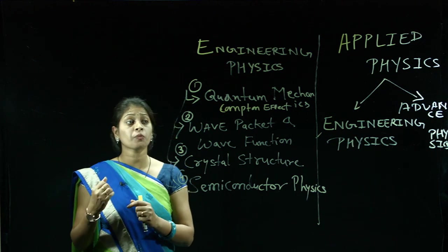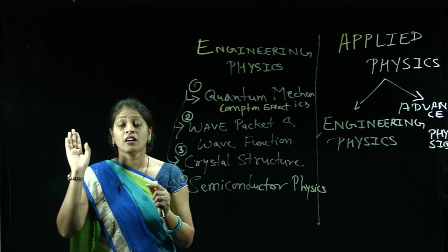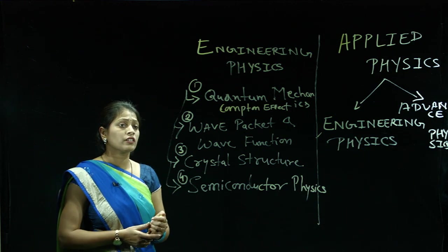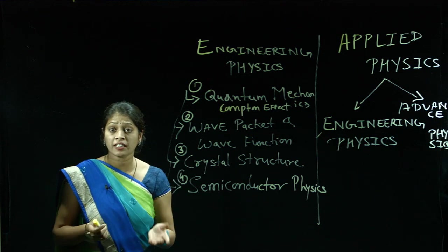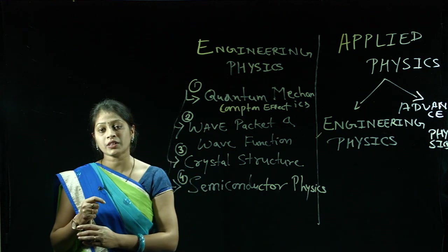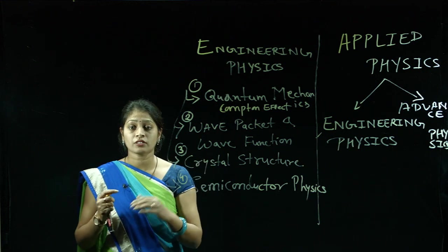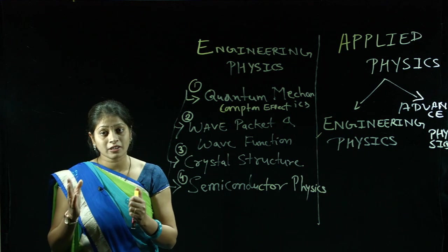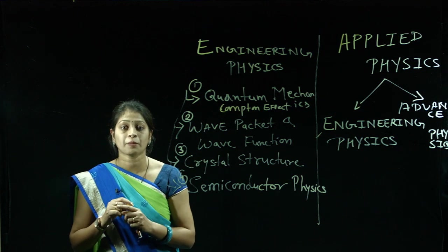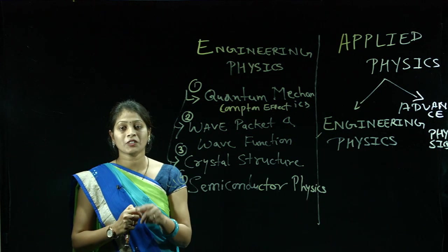After the de Broglie hypothesis, one important topic exists because at the time of de Broglie, the hypothesis was given without experimental proof. People of that time were confused — is de Broglie correct or not? After one or two years, Davisson and Germer, two scientists, set up an experimental setup for the de Broglie hypothesis. They took a diffraction pattern of electron rays and concluded with a very good result, confirming that de Broglie's hypothesis was correct. After this experimental proof, de Broglie was awarded the Nobel Prize.